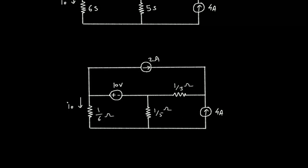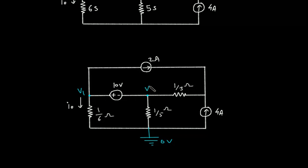Now, let's assume this is the reference node with 0 voltage. This is node 1 with voltage V1, this is node number 2 with voltage V2, and this is node number 3 with voltage V3.